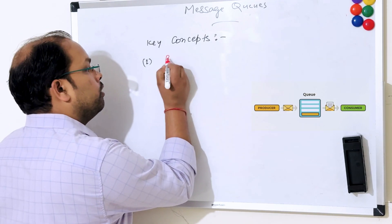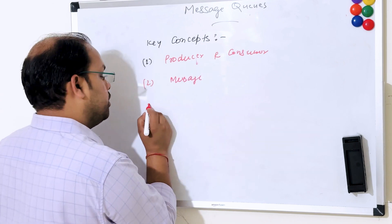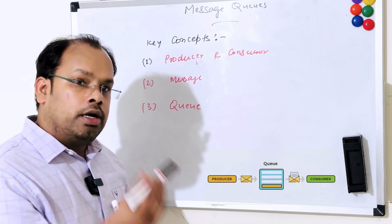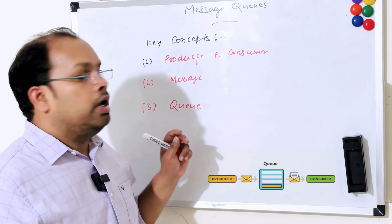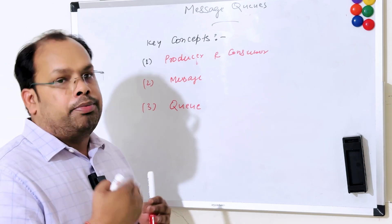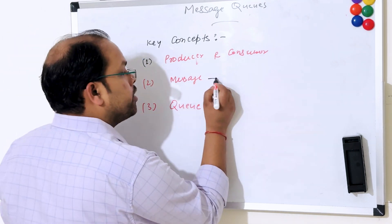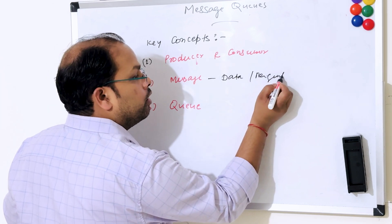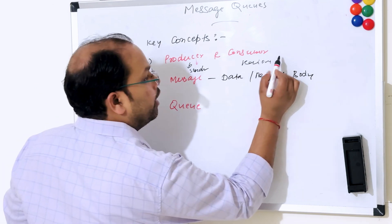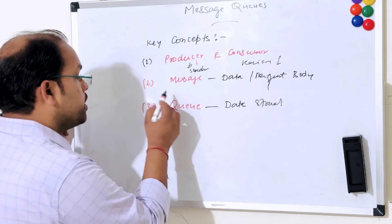Let's talk about the key concepts. One is producer and consumer, second is message, and third is queue. A producer is an entity which sends data or a message to the queue. A consumer is an entity which consumes and processes that message, and once it processes the data, the message is removed from the queue. The message is similar to a request body in any API.